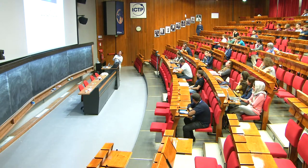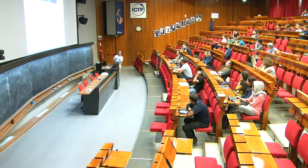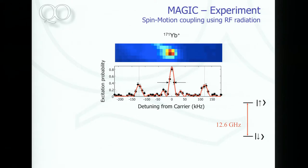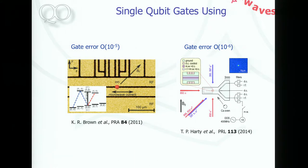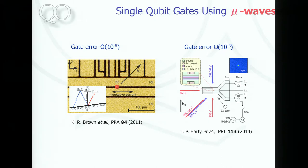You very clearly and completely unambiguously can identify these motional sidebands — you couple internal and motional states by having this microwave radiation. Other groups also do very nice work on microwaves or radio frequency waves with trapped ions. The group of Dave Wineland implemented single qubit gates using microwaves with an error of order 10⁻⁵, much better than any laser-implemented gates. The Oxford group implemented even better gates with even smaller gate error. These microwave gates work very well. Those are single qubit gates — I'll come to conditional gates in a little while.